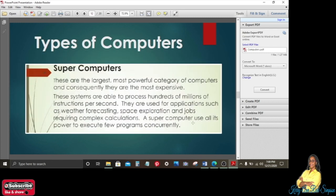Types of computers. Now we're going to be looking at types of computers. So you have the big bad supercomputer. These are the largest, most powerful category of computers, and consequently they are the most expensive. These systems are able to process hundreds of millions of instructions per second. They are used for applications such as weather forecasting, space exploration, and jobs requiring complex calculations. A supercomputer uses all its power to execute few programs concurrently.